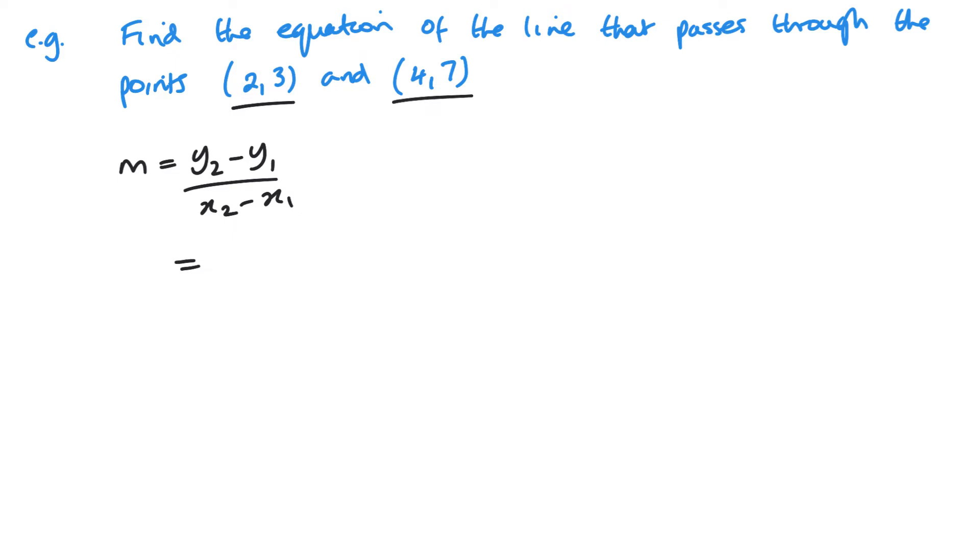I'm going to use the (4,7) as 2 here. So y is 7, and you can see the 4 is underneath it, and then y1 is 3, and x1 is 2. So 7 minus 3 is 4, 4 minus 2 is 2, so I've got a gradient of 2.